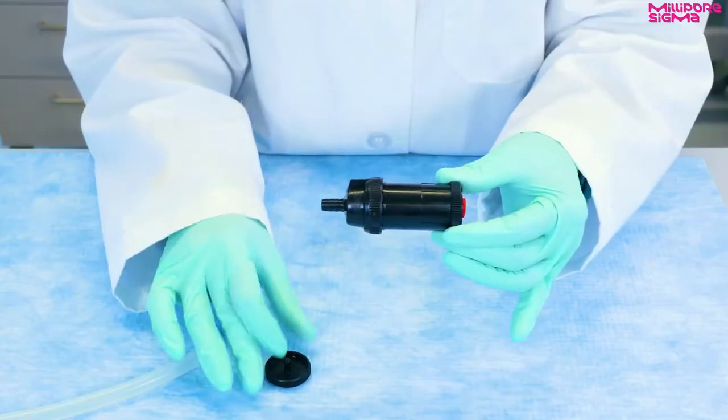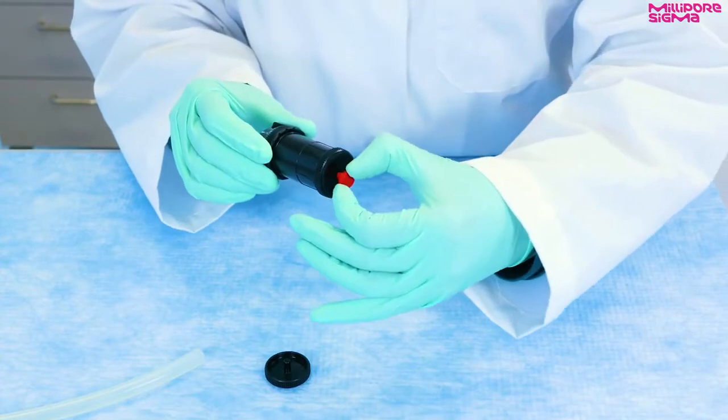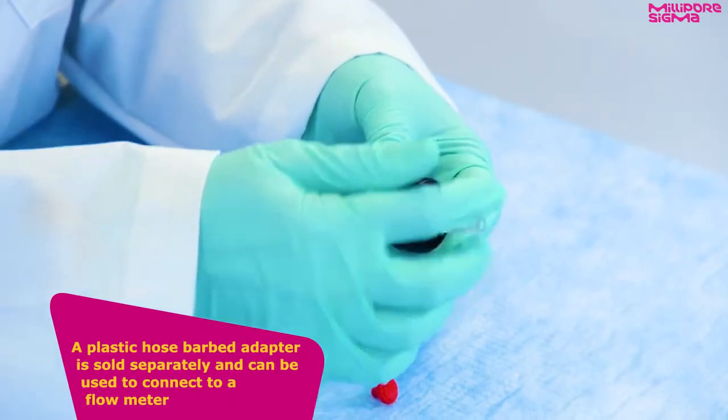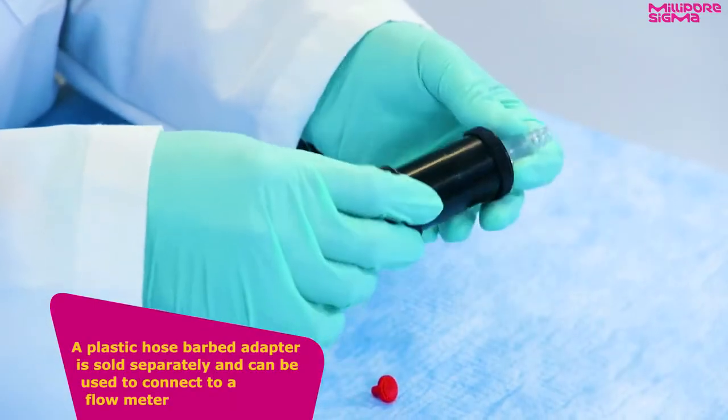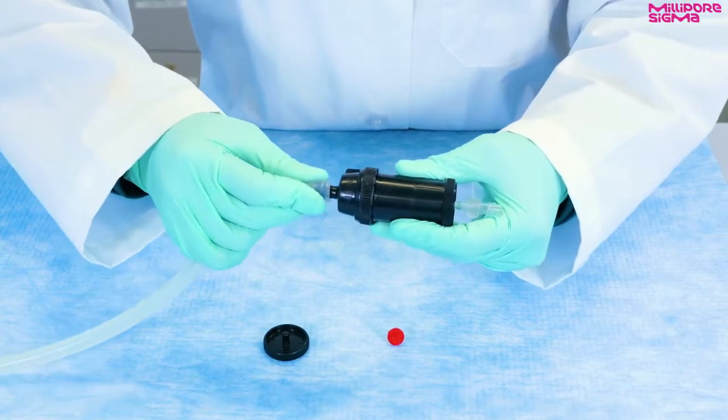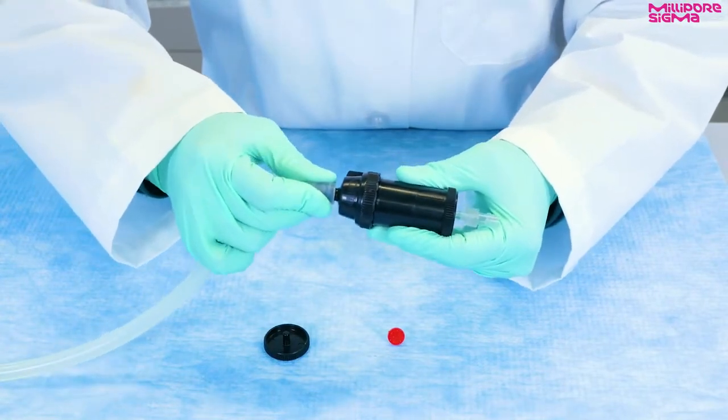To calibrate the vacuum pump with the air monitoring cassette, first remove the stand and the red plug. A plastic hose barbed adapter is sold separately and can be used to connect to a flow meter. Attach vacuum hose directly to the other end of the monitor and calibrate the pump as specified in the method.